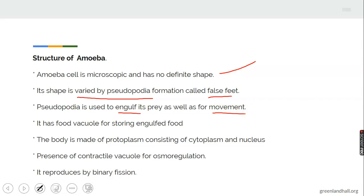It has a food vacuole for storing food. Its body is made up of protoplasm consisting of cytoplasm and the nucleus. It has contractile vacuole for excretion and osmoregulation and it reproduces by binary fission, that is dividing into two.